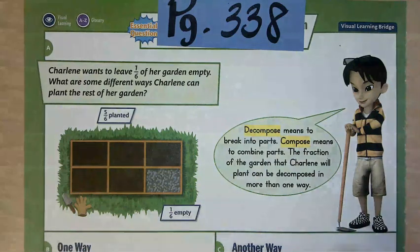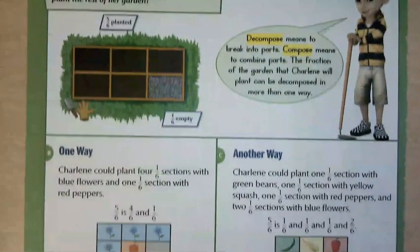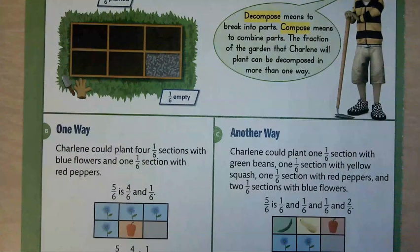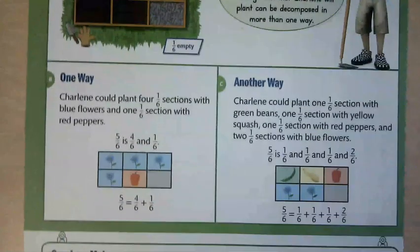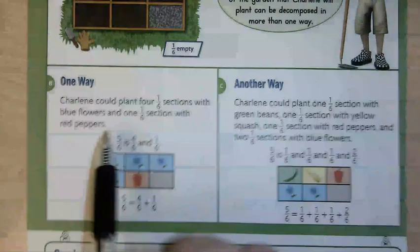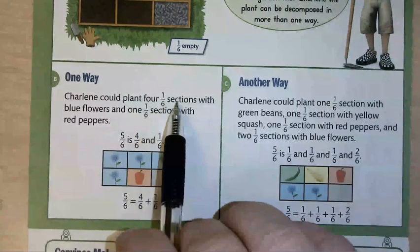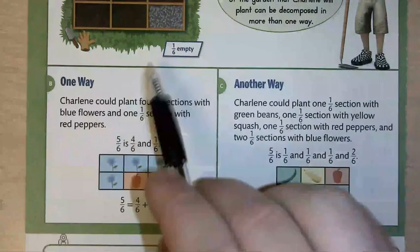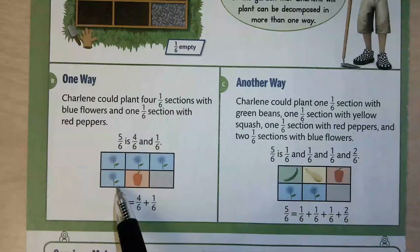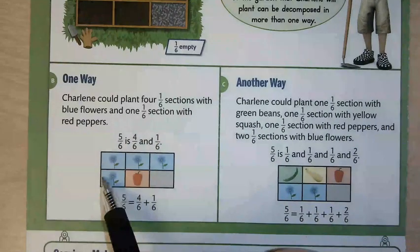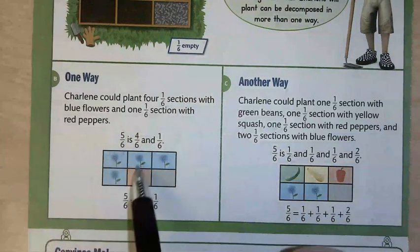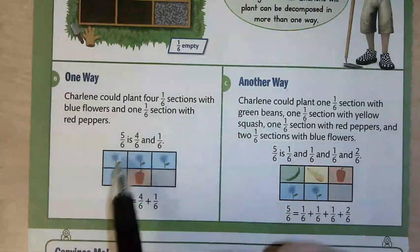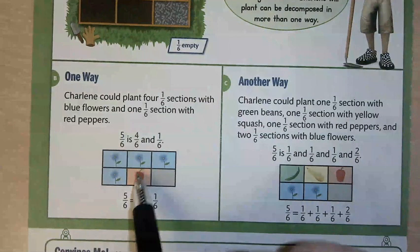So Charlene wants to know what she can plant in these extra spaces. For letter B it says Charlene could plant four 1/6 sections with blue flowers and then one 1/6 section with red peppers. So 5/6 equals 4/6 plus 1/6.